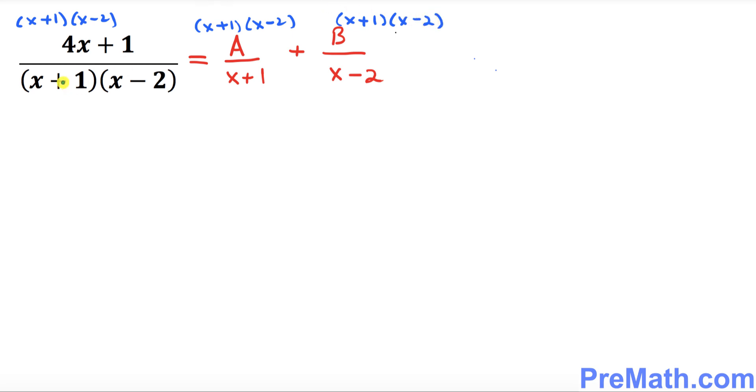So once we did that, you see this crosses out with this, each term cancels. So what we ended up with is just 4x plus 1 equal to A times (x minus 2) plus B times (x plus 1).